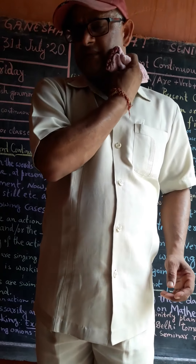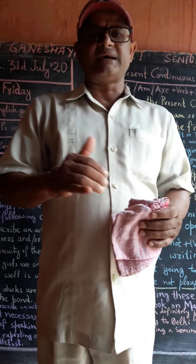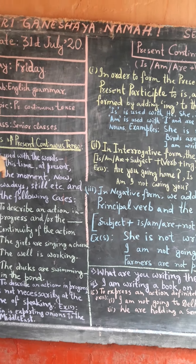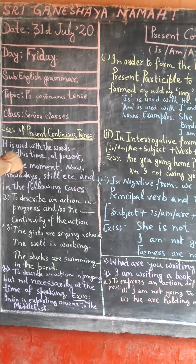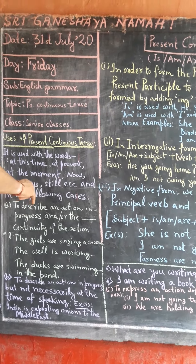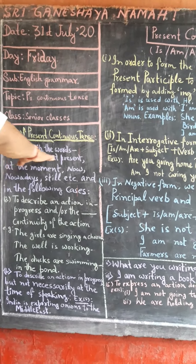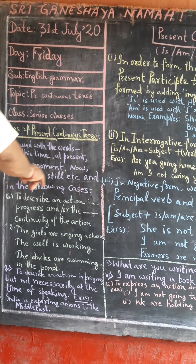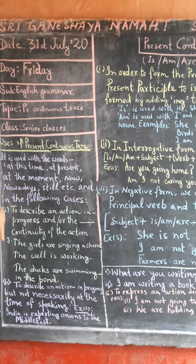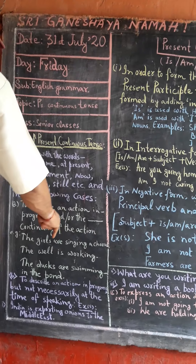Present continuous tense is used with the words like: at this time, at present, at the moment, now, still, etc. It is used in the following cases: to describe an action in progress and the continuity of the action.